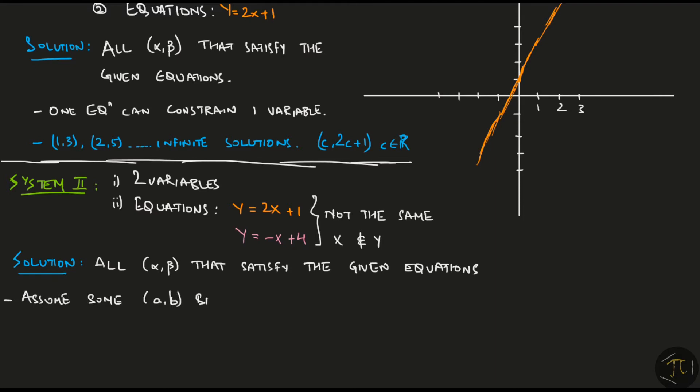We start by assuming that some AB satisfies both the equations. And since by assumption, it must satisfy both the equations simultaneously, we can put them in the equations. Now, because we have the same AB in both the equations,